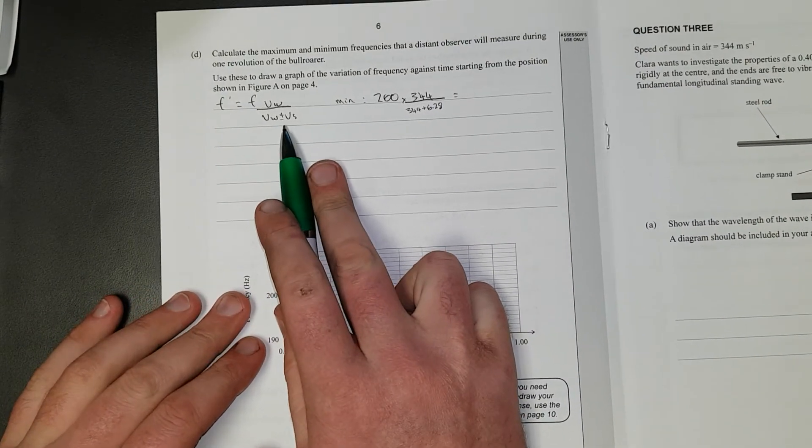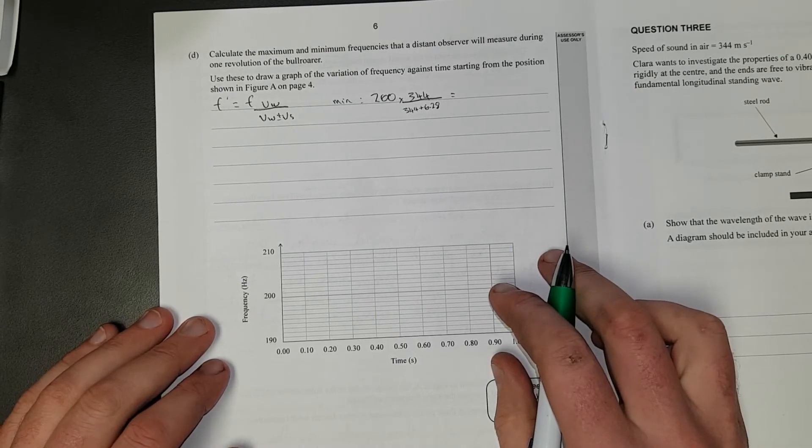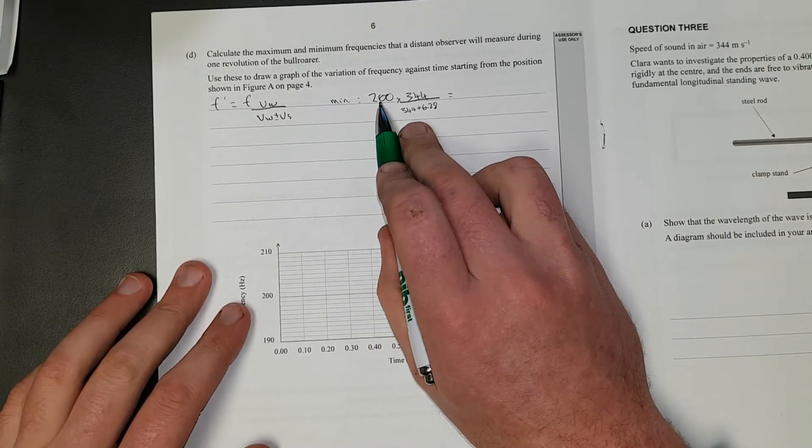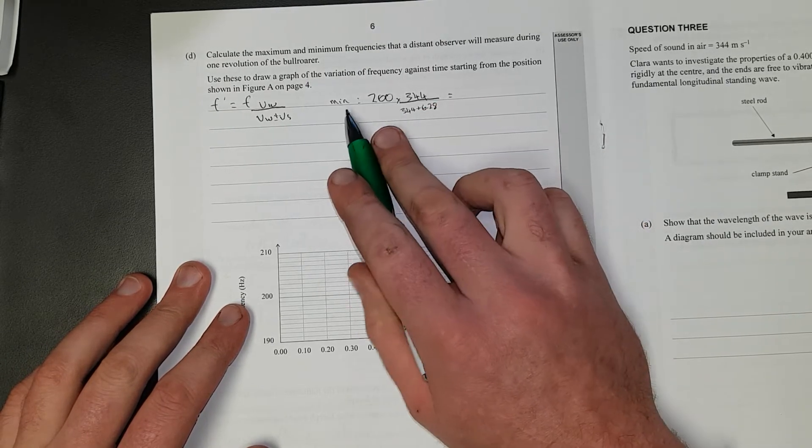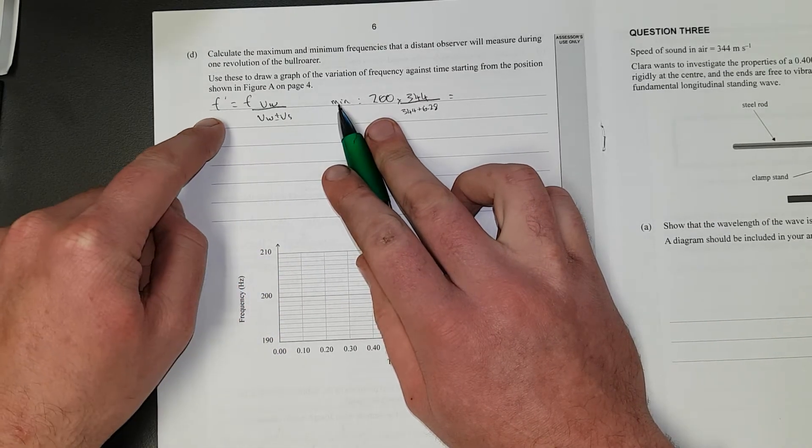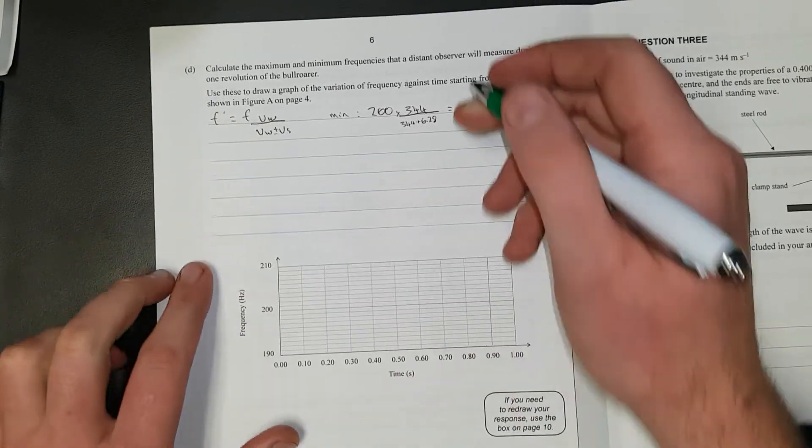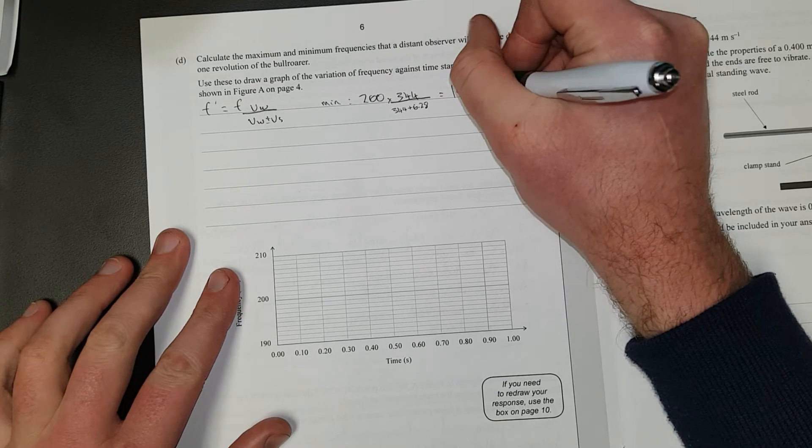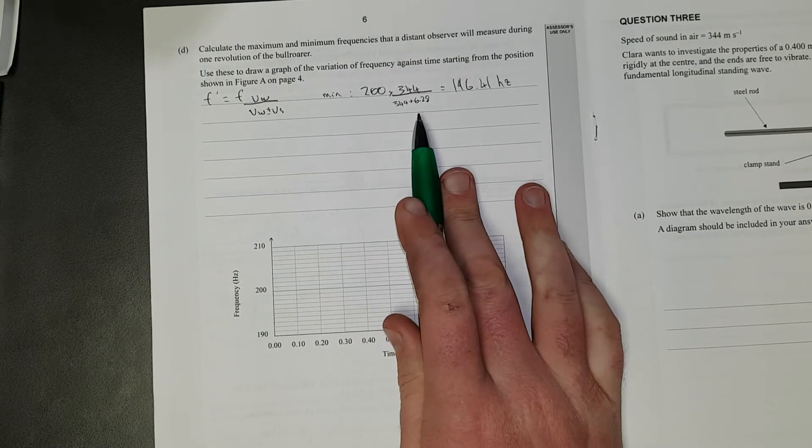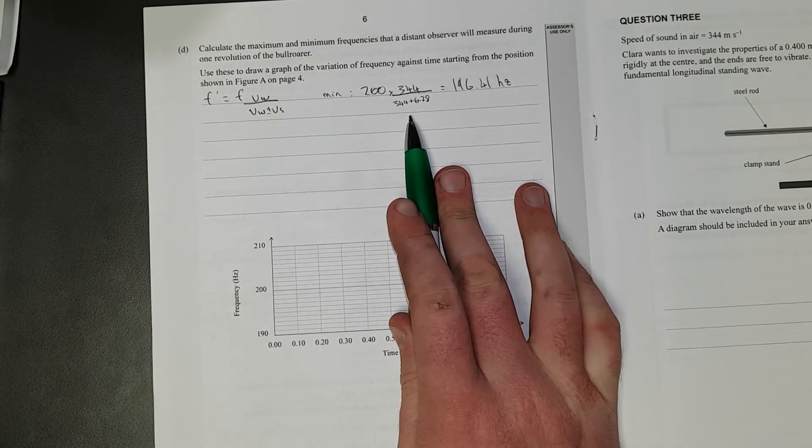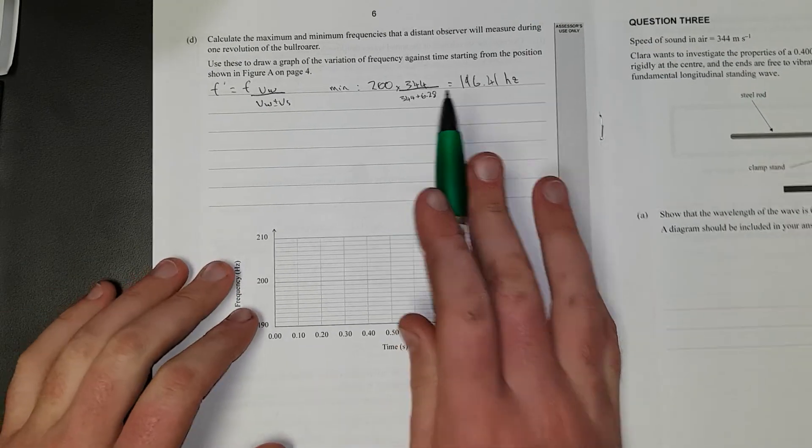When you try and learn whether to plus or minus, don't even bother learning it. You know, obviously, the minimum frequency is going to be less than 200. So your denominator has to be bigger than your numerator. So if you're looking for an observed frequency that's going to be less than your actual frequency, you're going to be plus. And that's going to give you 196.41 hertz. And that's how you figure out whether to use plus or minus, if it's going away or going towards.